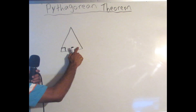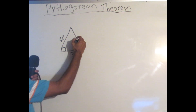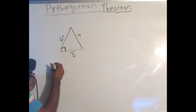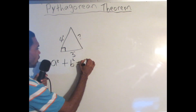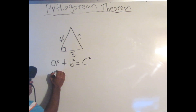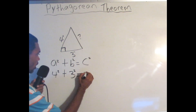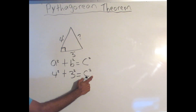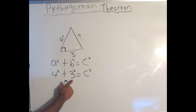Let's do another example. We have a right triangle and we want to find the missing length. This side could be shown as a question mark or as x. We'll use the formula a² + b² = c². We know that a is 4, so it's 4 squared, plus b is 3 inches, so it's 3 squared, and that equals c squared — which is what we're looking for.